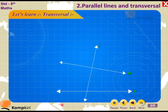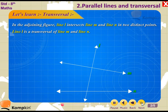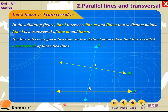Transversal. In the adjoining figure, line L intersects line M and line N in two distinct points. Line L is a transversal of line M and line N. If a line intersects two given lines in two distinct points, then that line is called a transversal of those two lines.